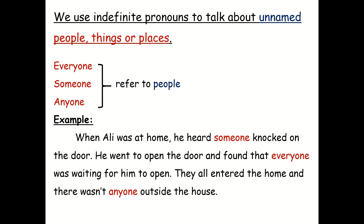We use indefinite pronouns to talk about unnamed people, things or places. Everyone, someone, anyone refer to people. For example, when Ali was at home, he heard someone knock on the door. He went to open the door and found that everyone was waiting for him to open. They all entered the home and there wasn't anyone outside the house.